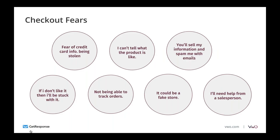Starting with checkout fears: first is the fear of credit card information being stolen. Many users don't complete checkout because they worry the website is a fraud or their credit card information isn't secured. One way to fix this is to use an HTTPS link for your site, then use SSL and different security and financial transaction licenses to ensure there's no phishing or hacking. It's important to reflect these measures visibly on your website so users know you're using them.